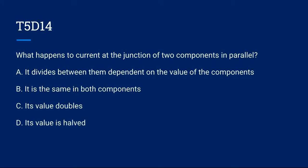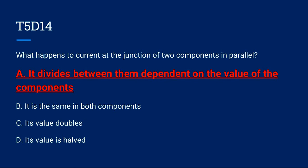T5D14: What happens to current at the junction of two components in parallel? A. It divides between them dependent on the value of the components, B. It is the same in both components, C. Its value doubles, or D. Its value is halved. Correct answer is A. It divides between them dependent on the value of the components.